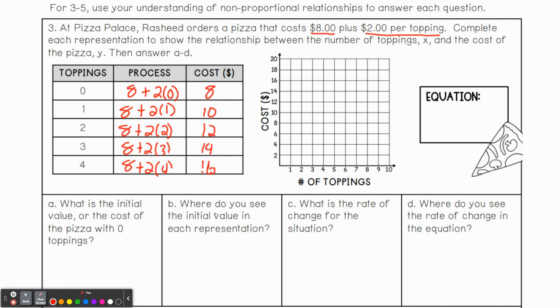So now we can go ahead and graph that out. So again, at zero toppings, you will have paid $8 for the pizza at one, 10, two, 12. And you can see this pattern going on up through. Let's talk about writing the equation.